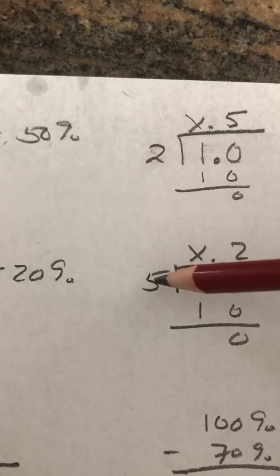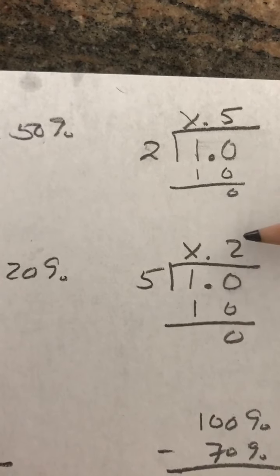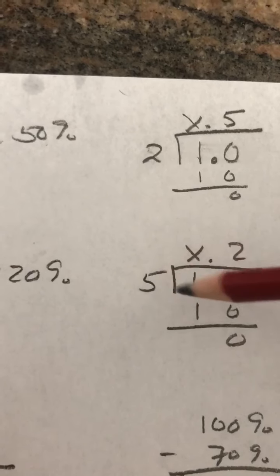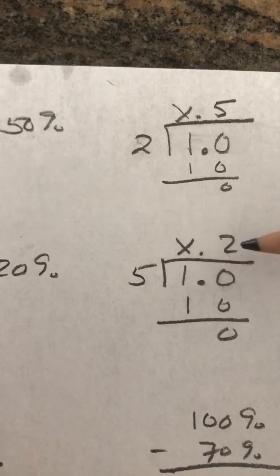Now, if I have one, I cannot make any group of five. So I put an X or a placeholder there. If I have 10, I can make two groups of five. Two times five is 10. I have nothing left over. So this is going to become 0.2.